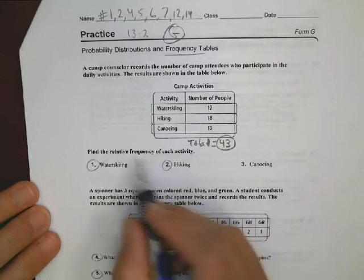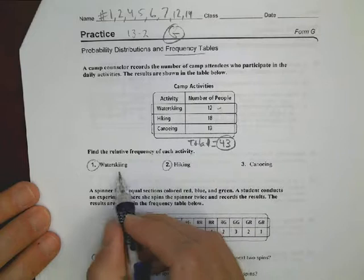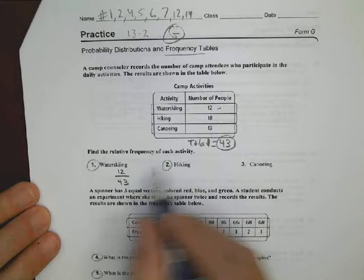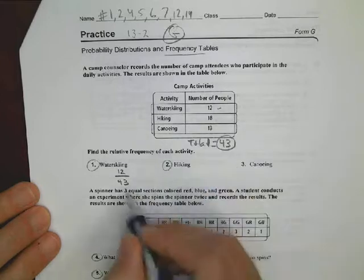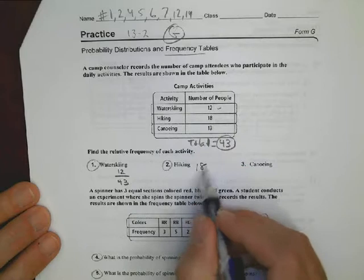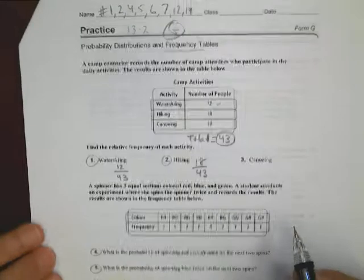That's going to be my denominator when I look at the frequency of what takes place in these events. So the relative frequency of water skiing is going to be 12 out of the total number of people that took part in it, 43. So that's really all there is to it. You get your total, that becomes your denominator, and then you look at the other numbers. Hiking is going to be 18 out of 43. I'll let you do canoeing on your own because it's the same process there.